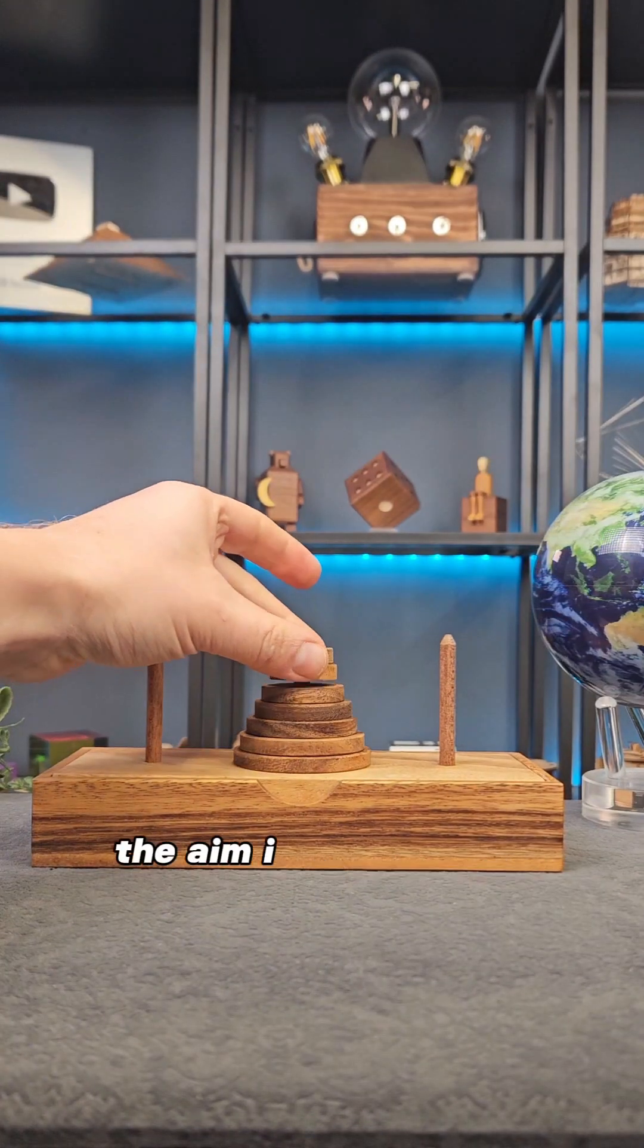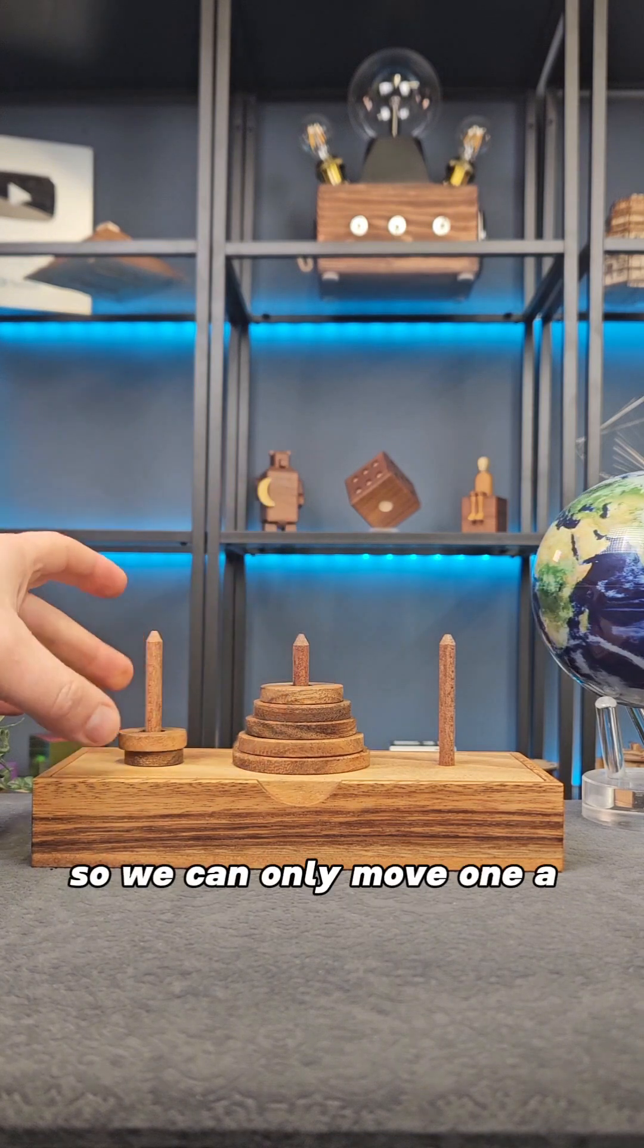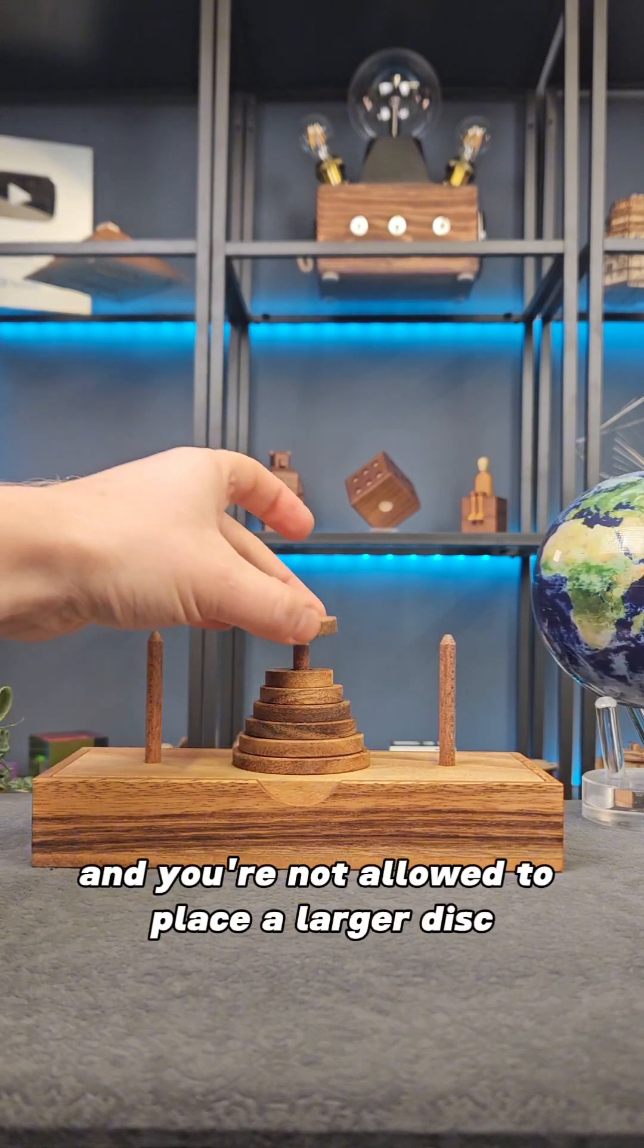This puzzle is called the Tower of Hanoi. The aim is to move these wooden discs from one peg onto another. There are some rules: we can only move one disc at a time, and you're not allowed to place a larger disc on top of a smaller one.